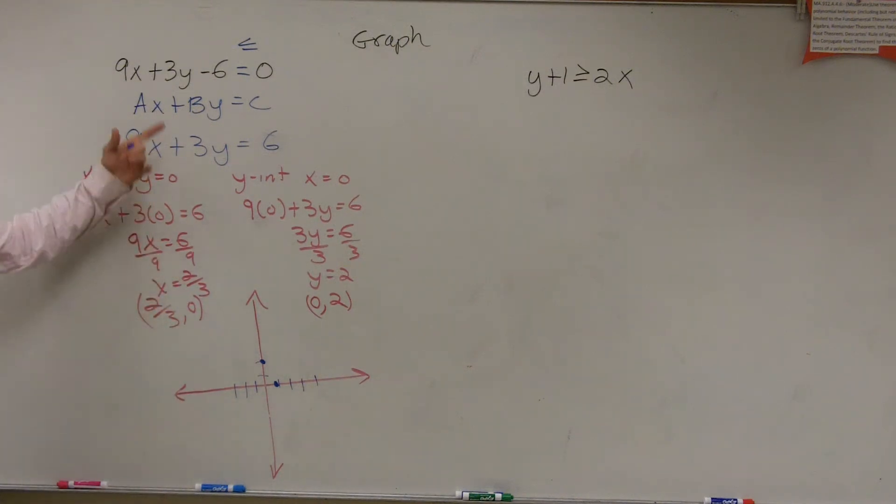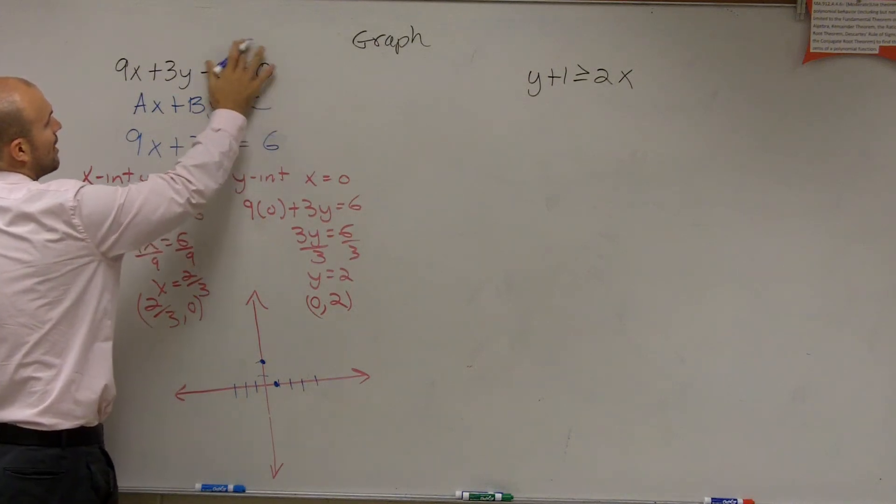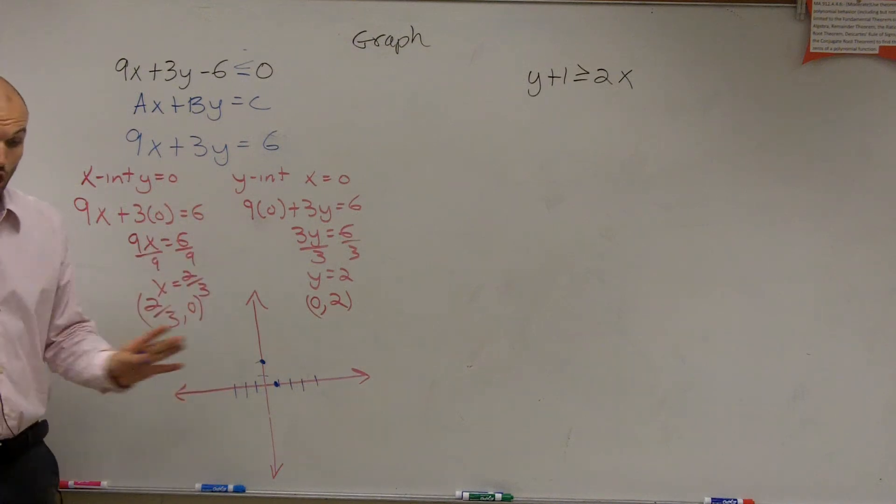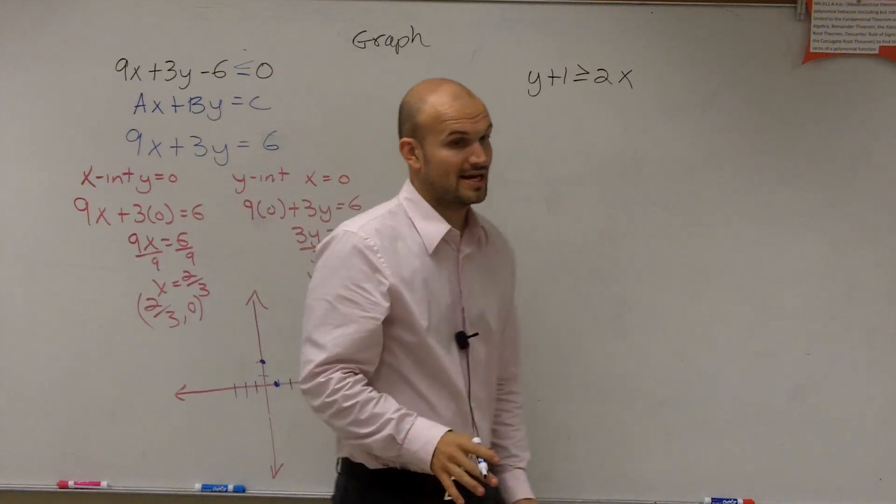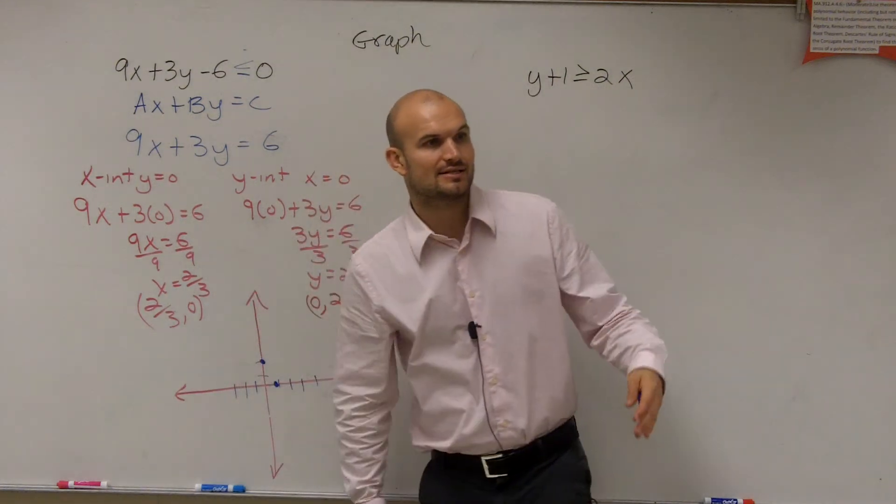Now, here's where I want to go back and put in my inequality sign, so I can remember how I'm going to graph the line. So those are my two x and y-intercepts. When graphing at this method, that's all you need. You just need to know the x and y-intercepts.